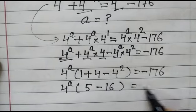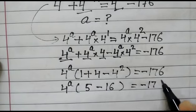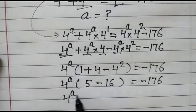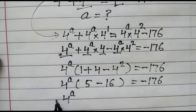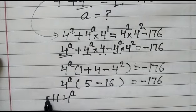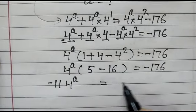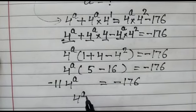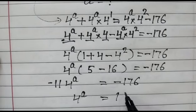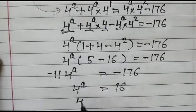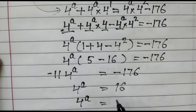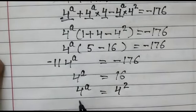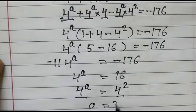So 4^a times (5 minus 16) equals minus 176. That gives 4^a times (minus 11) equals minus 176, so 4^a equals 16. Since 16 is 4 to the power 2, base are same so power will be same — therefore a is equal to 2. Thank you friends!